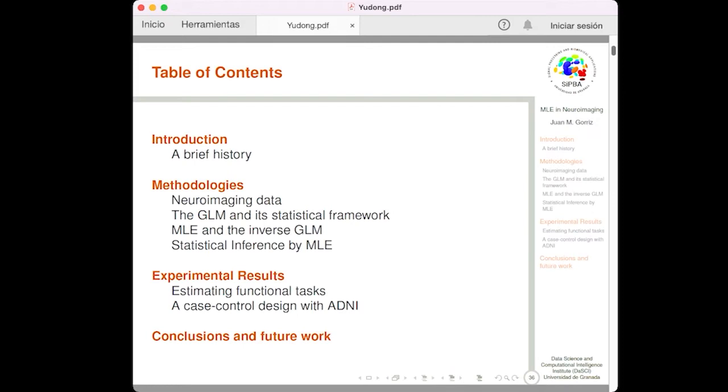Well, this is the summary of my presentation. First, I will go on a brief introduction to the field and a brief history of the application of machine learning to neuroscience. Then, I will describe several methodologies in this context, from the imaging datasets to the assumptions and ubiquitous models employed for neuroimaging data analysis. In this section, I will continue by giving the complete connection between the GLM and its statistical framework with the statistical inference by machine learning. Then, I will show some experimental results using synthetic and real data, for example, ADNI data set. And finally, I will draw some conclusions and identify the main challenges for future work at the end of the presentation.